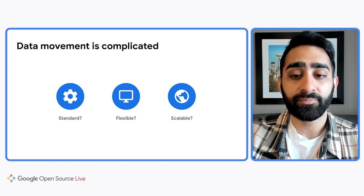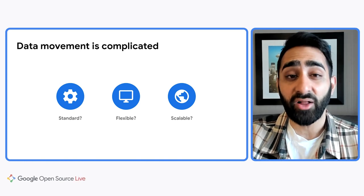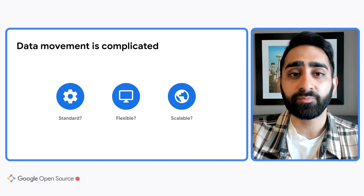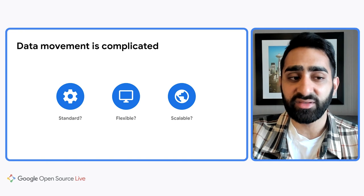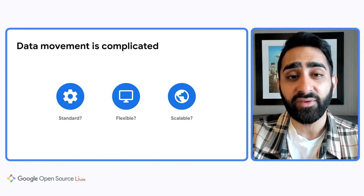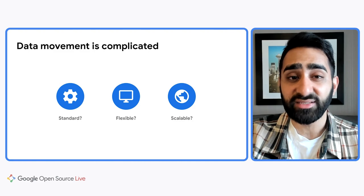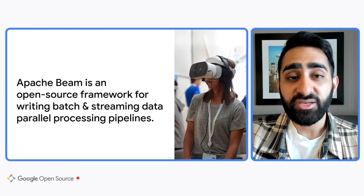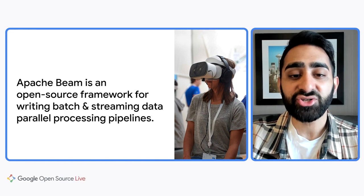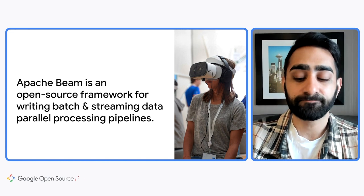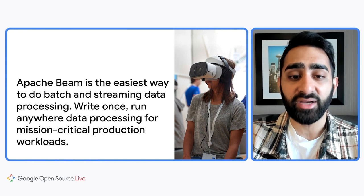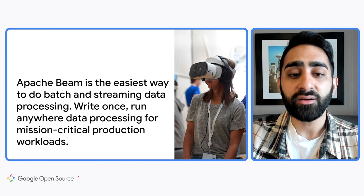And then lastly, scalability. How do you pick technology that will handle the growing volume of data as well as the various types of data? Oftentimes, certain projects are only going to be able to support just a subset of the data types that are growing and evolving. How do I pick one that is battle-tested for the long run? Which brings me to Apache Beam. Apache Beam is an open source framework for writing batch and streaming data parallel processing pipelines. It is the easiest way to do batch and streaming data processing — you write once, you run anywhere for your data processing for mission-critical production workloads.